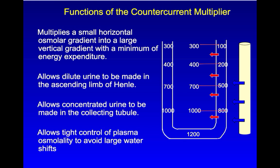This, in turn, allows dilute urine to be created in the ascending limb if needed, allows concentrated urine to be made in the collecting tubule if needed, and thus allows urine osmolality to be adjusted in order to maintain a constant plasma osmolality so that large water shifts in and out of cells causing potentially dangerous cell swelling or shrinkage can be avoided.